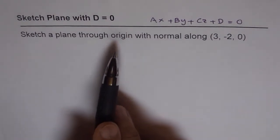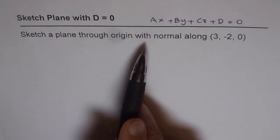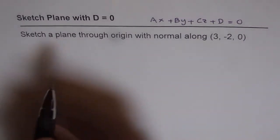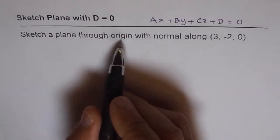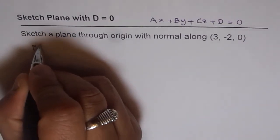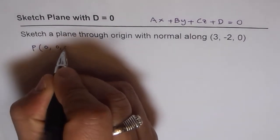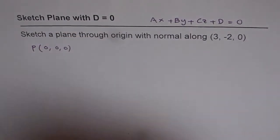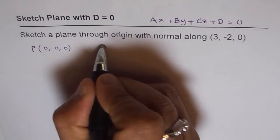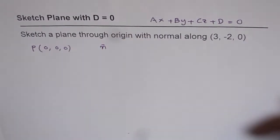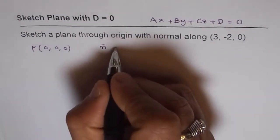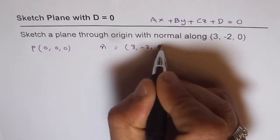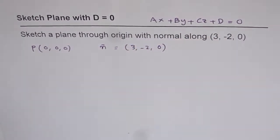Sketch a plane through the origin with normal along (3, -2, 0). So when we say the plane is going through the origin, that means the point origin — that is (0, 0, 0) — is contained in the plane. We are not given the equation of the plane, but we are given the normal to the plane which is (3, -2, 0). So that is the normal.